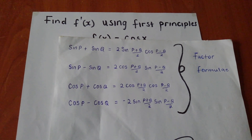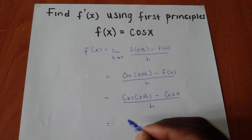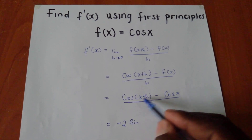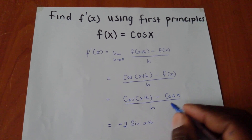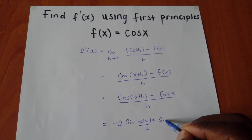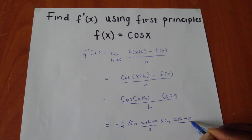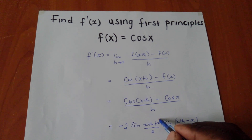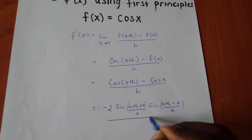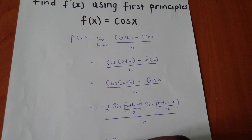Following the same criteria, we get negative 2 sine of ((x plus h) plus x) over 2, times sine of (x plus h minus x) over 2, all over h. This is how the identity is applied to our expression.